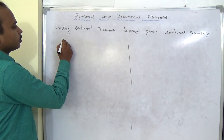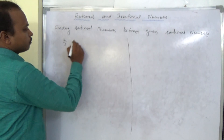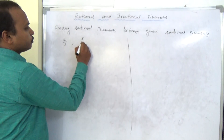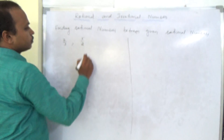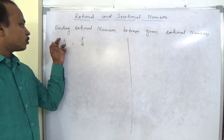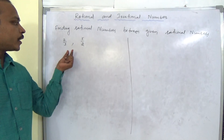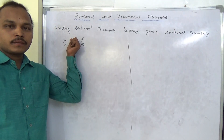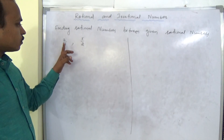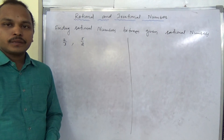For example, two rational numbers are given: 2 by 3 and 5 by 2. We need to find out one more rational number in between. Generally, what we do is — between these two, we add both and divide by 2. That gives us the middle value. That is one method.